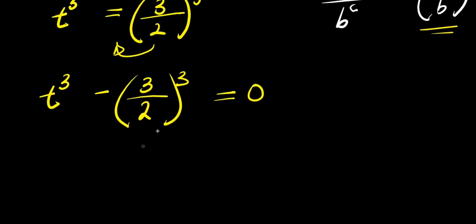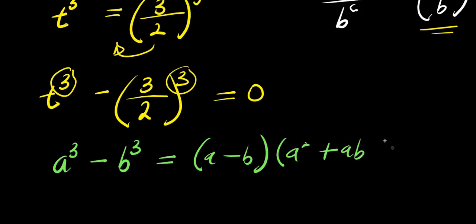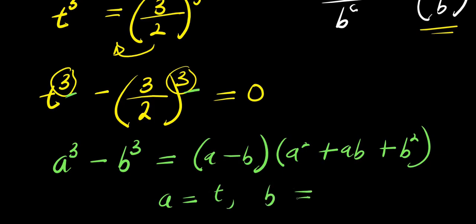The next step is to expand using the cubic identity, since both terms are raised to power 3. The identity states: a to the power of 3 minus b to the power of 3 equals a minus b, times a squared plus ab plus b squared. In this case a equals t and b equals 3 divided by 2.